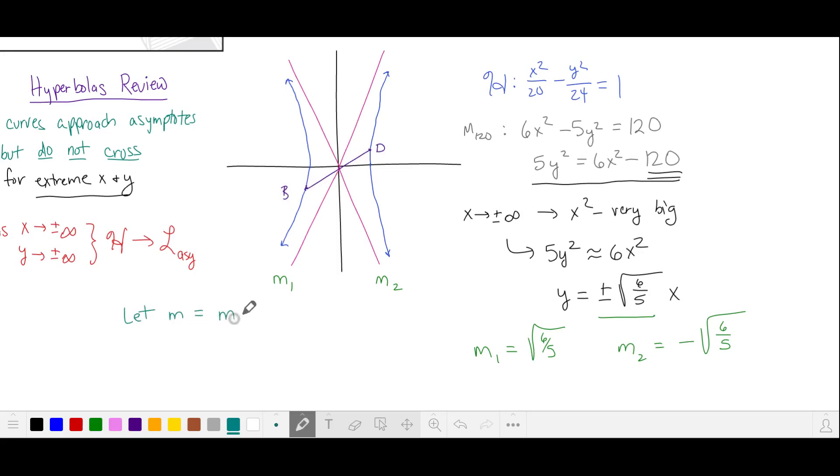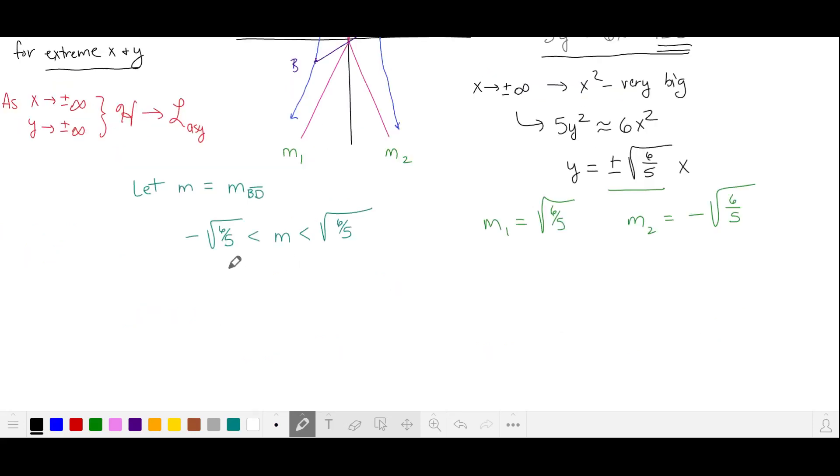Let's let m be the slope of this line segment BD. In order to connect the two parts of this hyperbola, the slope of BD must be between the slopes of m₁ and m₂. So I'll write this inequality here. We can abbreviate this by writing that the absolute value of m is less than the square root of 6 fifths. And let's square both sides.